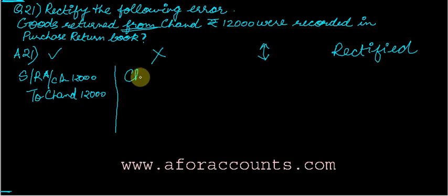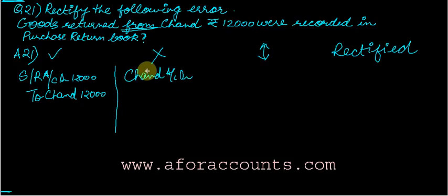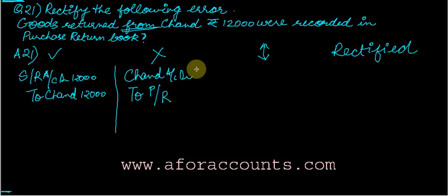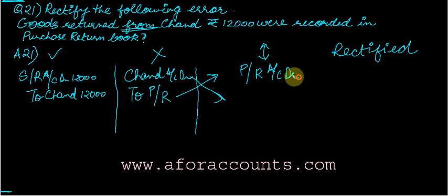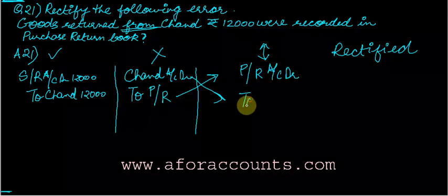So what was done wrong: Chand account was debited, and since purchase has a debit balance, purchase return will have a credit balance — so it was credited to purchase return. This is the mistake committed. To reverse it, just reverse the entry: Purchase Return Account debit, to Chand, 12,000.